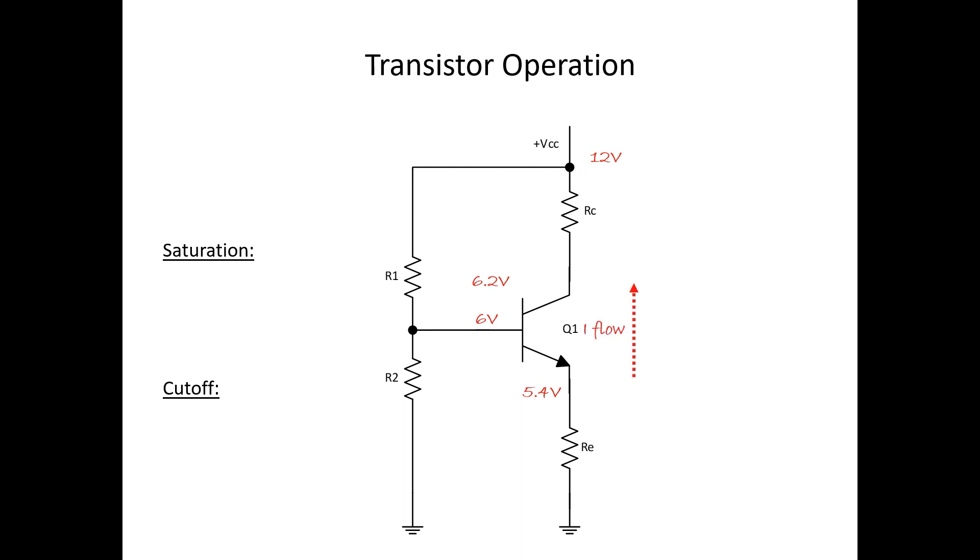Current flow through the emitter, current flow through the base, and current flow through the collector. Now if I increase this value and continue increasing it, eventually the forward bias of the base emitter junction won't be able to increase anymore or we won't be able to increase current flow anymore.